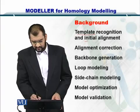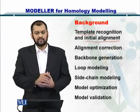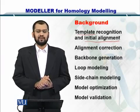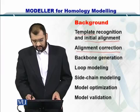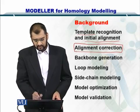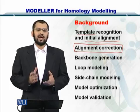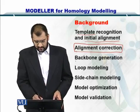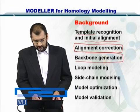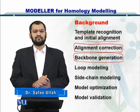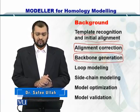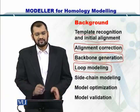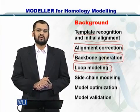Secondly, you align these sequences with the query protein, or target protein, and you optimize their alignment. Next, you correct the alignment in order for it to contain the minimum amounts of gaps and mismatches. Next, you create the backbone for the protein, followed by loop modeling in which you create all possible combinations of loops and see which loops are most suitable to be placed onto the backbone.